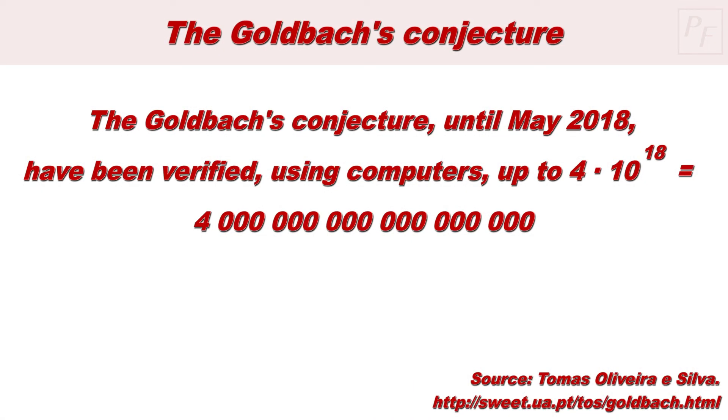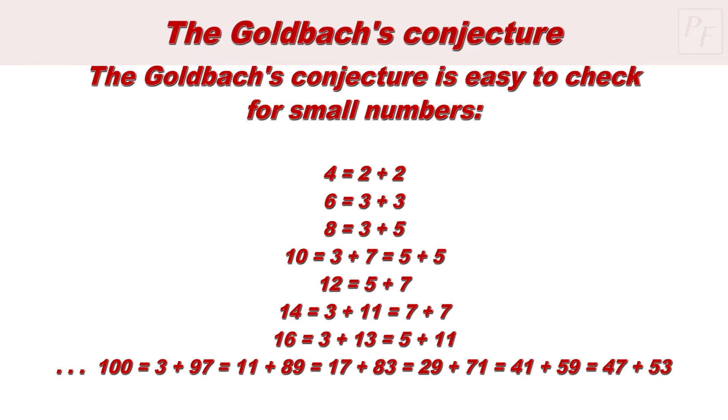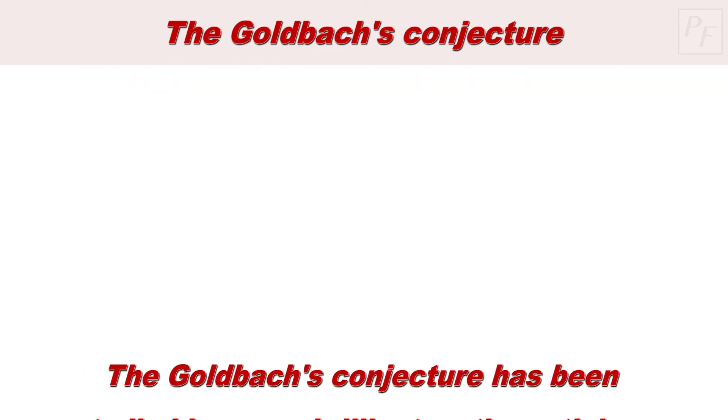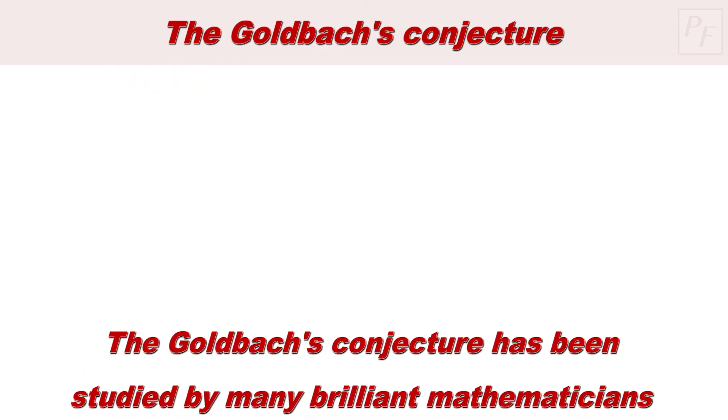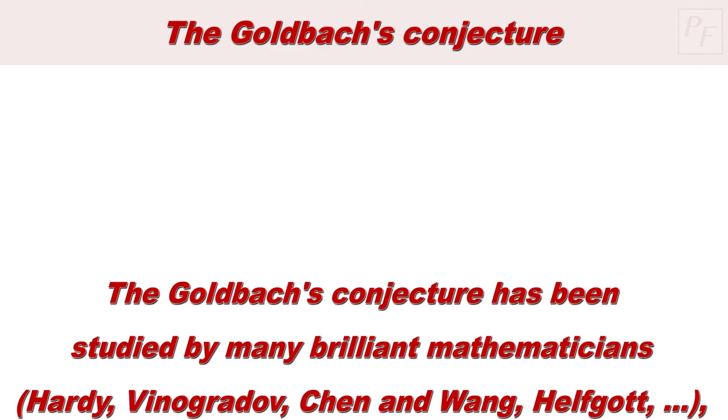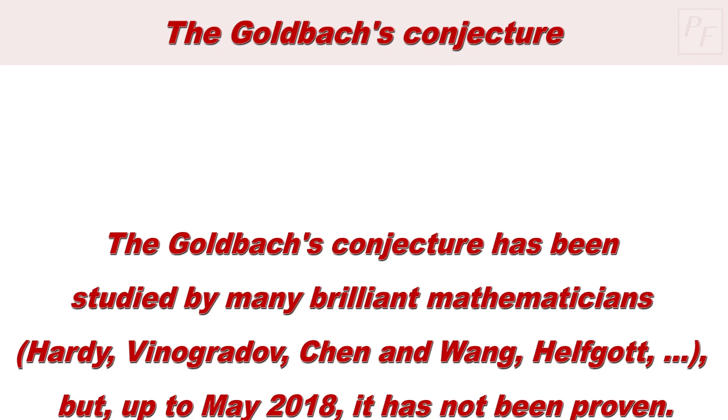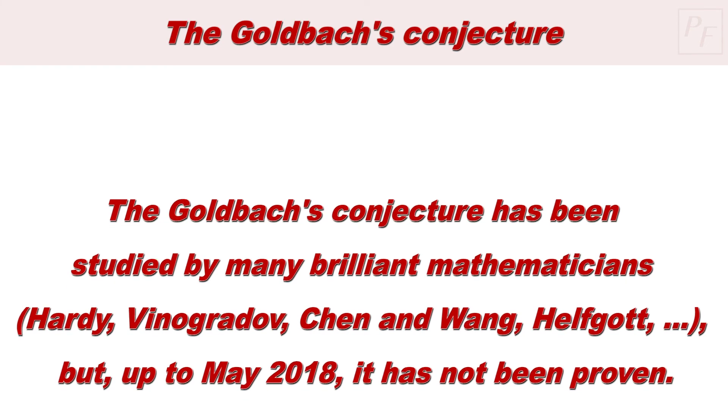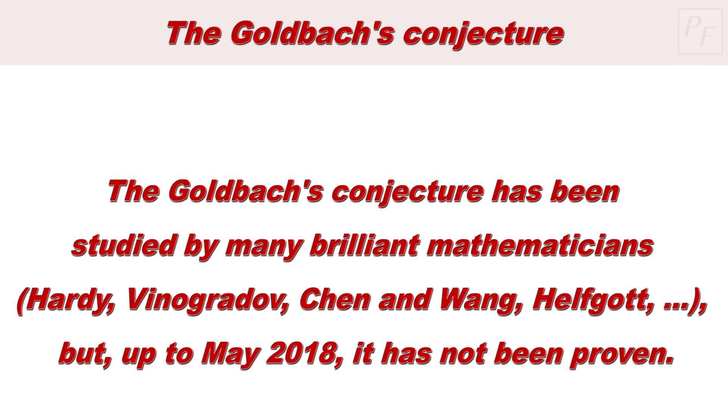Goldbach's conjecture had been verified by means of computers for all even numbers up to 4 multiplied by 10 raised to 18. For small numbers, the conjecture is very easy to check. The following example is done up to number 16. And note that there are several ways to do this as our number grows. But verifying a conjecture, even up to astronomical numbers, is not proving it, as there may be an infinity of cases where it is not true. Mathematicians have the habit of not taking anything for granted. And this is why this conjecture is not a theorem.